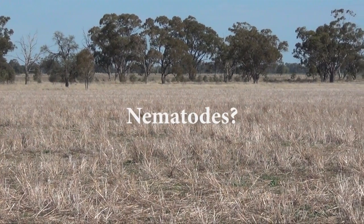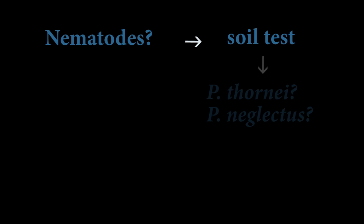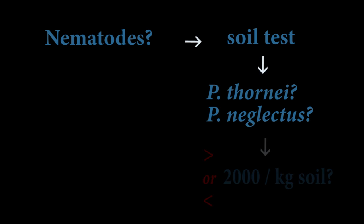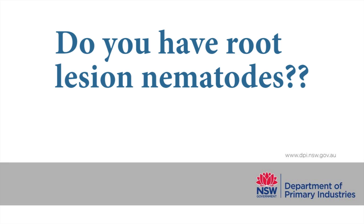Root lesion nematodes are a hidden problem in many paddocks. Soil testing is the first step in identifying the magnitude of the problem and identifying which species of root lesion nematodes are present. This will allow strategic crop and variety choices to be made in local farming systems to reduce their impact. Testing for root lesion nematodes should be considered before the next cropping season. Do you have root lesion nematodes in your paddocks?